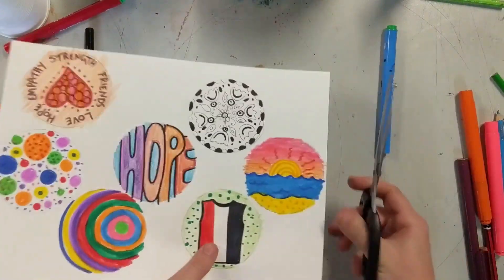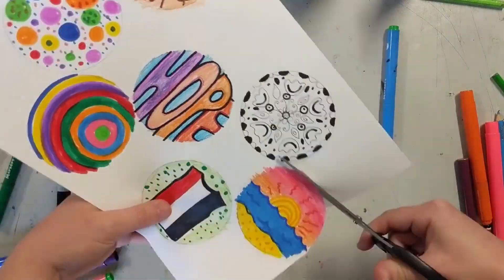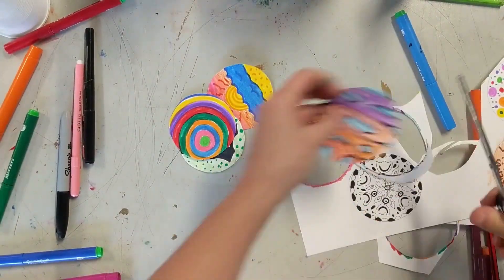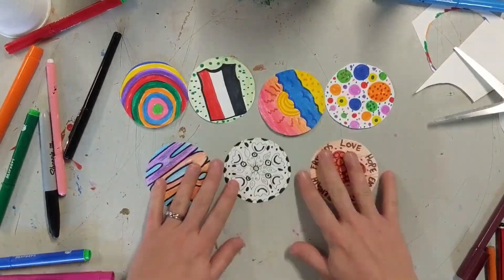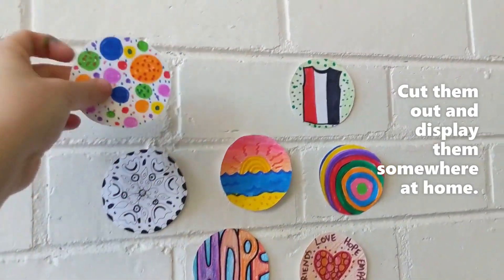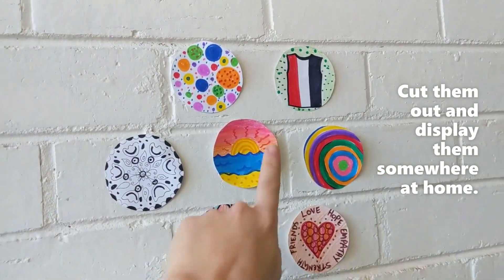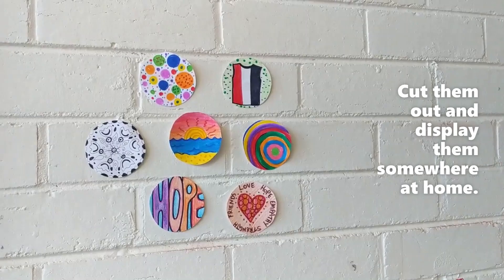Really important. I want you to practice your cutting skills and cut around so they're nice and neat. And we've got all of our dots. Now make sure you, if you can, if you've got some blue tack, cut them out. Put them up somewhere in your house. They're really nice and bright. Display them where you can.